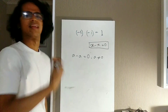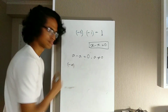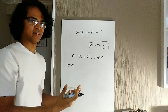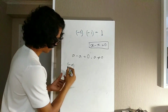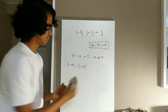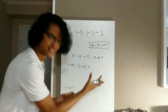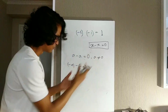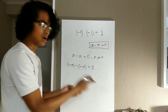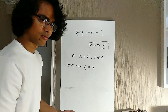Now let's say I have another number: minus a. What I will do is also subtract minus a from minus a. And because of this axiom, minus a minus minus a will also equal 0. So a minus a equals 0, and minus a minus minus a also equals 0.